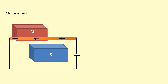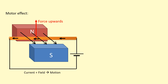In the motor effect, we have current flowing through a wire, and this produces a magnetic field around the wire. The field around the wire interacts with the field that's already there between magnets, and that produces a force on the wire. So in this case we have current and field interacting together to produce motion or force.